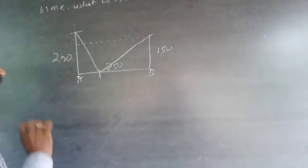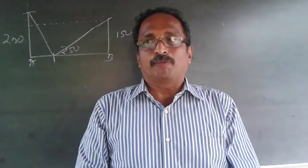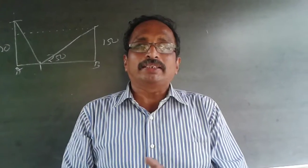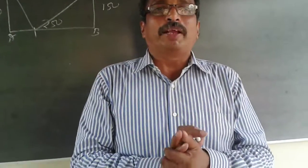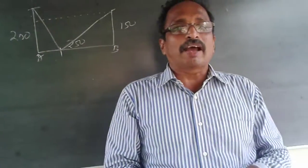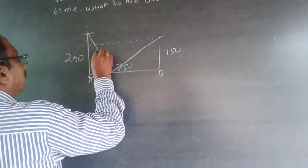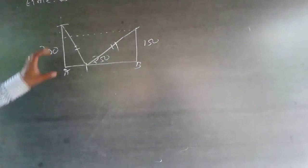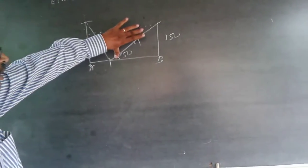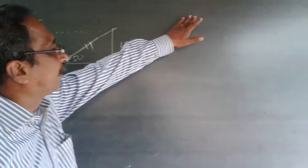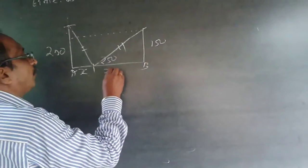Both birds start at the same time, have the same speed, and reach at the same time. Speed and time are equal, which means the distance travelled is also equal. The distance travelled by one bird — from the top of Tower A to the feed — equals the distance travelled by the other bird. In other words, the hypotenuses of these two right angle triangles are equal. What we want is this distance x from Tower A, so the other segment becomes 250 minus x.